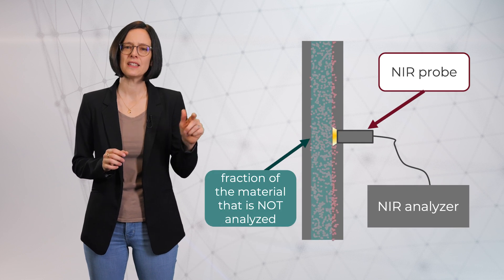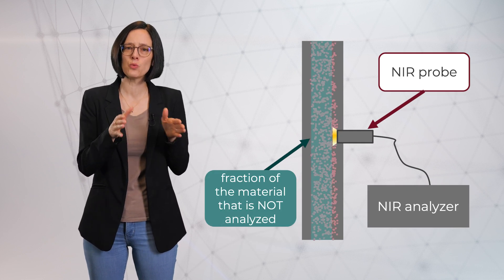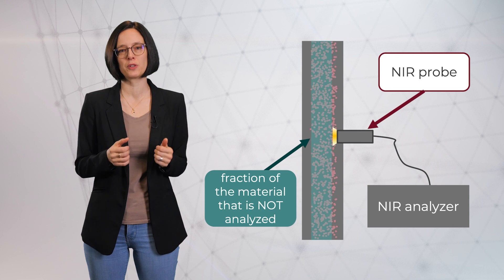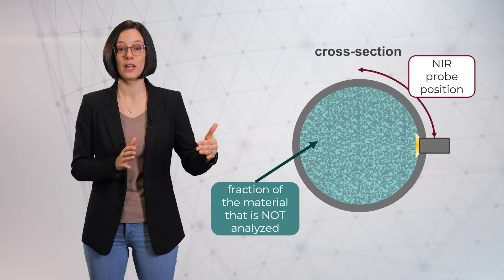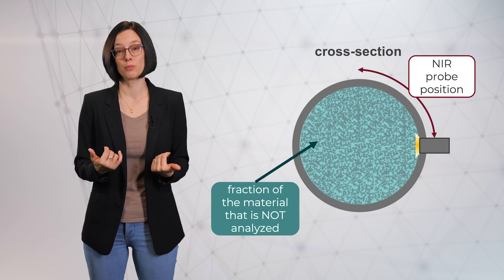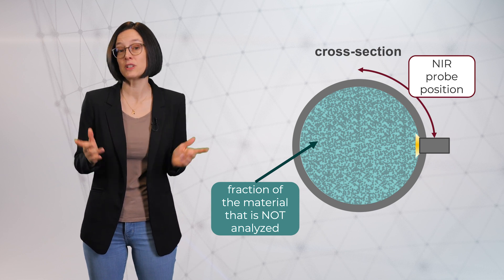You can see that the NIR can only see one specific fraction of the material flow, and the spatial orientation of the probe cannot be changed during operation, if it can be changed at all.